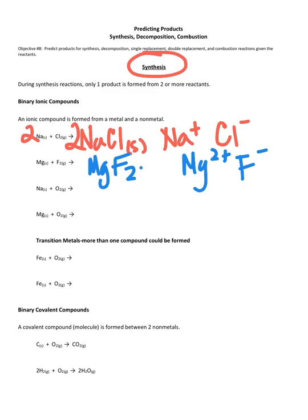So MgF2 is our chemical formula. Again ionic compounds are typically solids so we'll do a little s there and once again we want to balance but this equation is already balanced. We have one magnesium on each side and two fluorines on each side of the chemical equation.